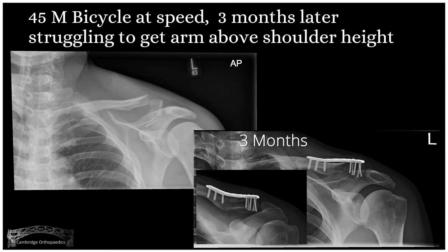A 45-year-old male falls off his bicycle at speed, has fixation around the time of his injury, and presents three months later struggling to get his arm above shoulder height. What is the significance in terms of the fixation of this small fragment? What is the differential for why he can't get his arm above shoulder height?